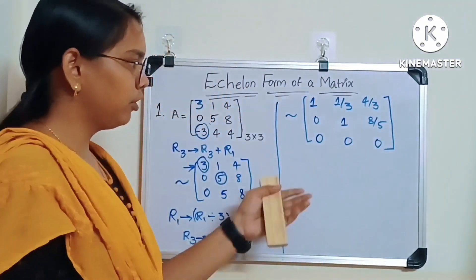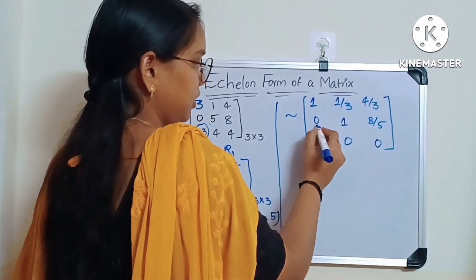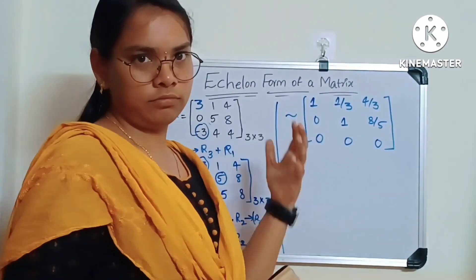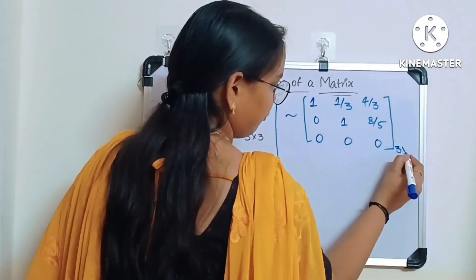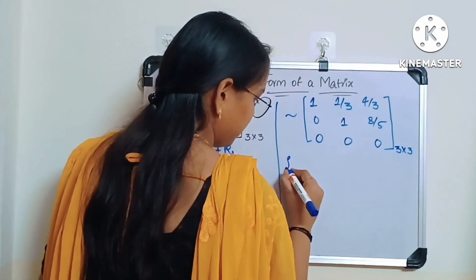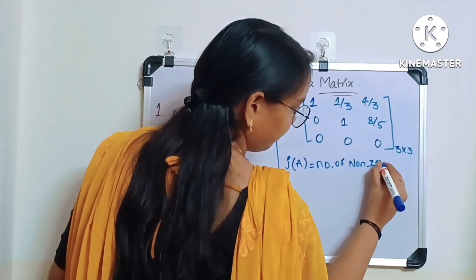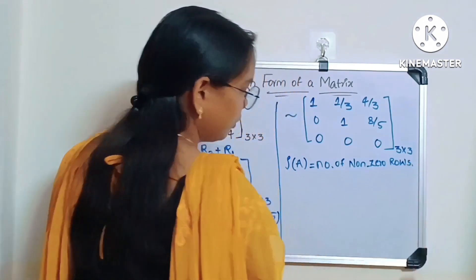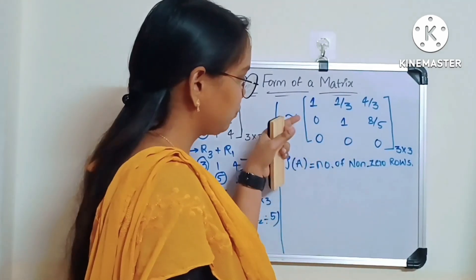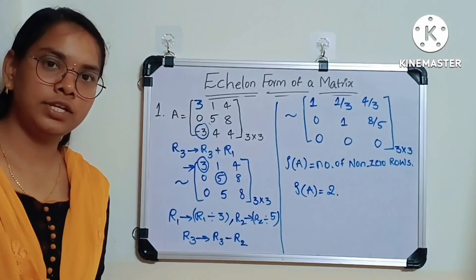We can't do any more row operations, so this is the final matrix after row operations. From here we can find the rank of the matrix. As we understood, the rank of a given matrix equals the number of nonzero rows. Here there are 3 rows total, but 1 row is a zero row, so there are 2 nonzero rows. Therefore, the rank of the given matrix A is equal to 2.